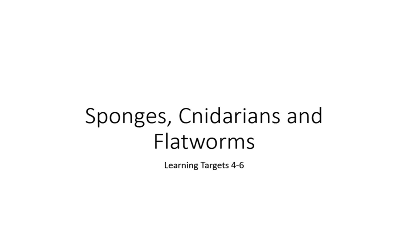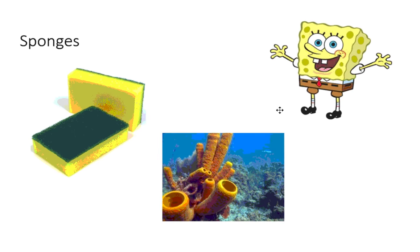This video covers learning targets four through six: sponges, cnidarians, and flatworms. Sponges are the simplest of all animals, meaning they share only the most basic characteristics with other animals. Remember those basic things: multicellular, eukaryotic, heterotrophic cells that lack cell walls. These are the most basic characteristics of animals, and sponges share only those things with other animals — very simple organisms.